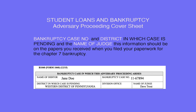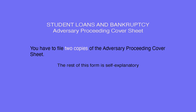On the second page, the parts that say Bankruptcy Case Number, District in which case is pending, and the name of Judge — this information should be on the papers you received when you filed your paperwork for Chapter 7 Bankruptcy. You have to file two copies of the Adversary Proceeding Cover Sheet. The rest of this form is self-explanatory.